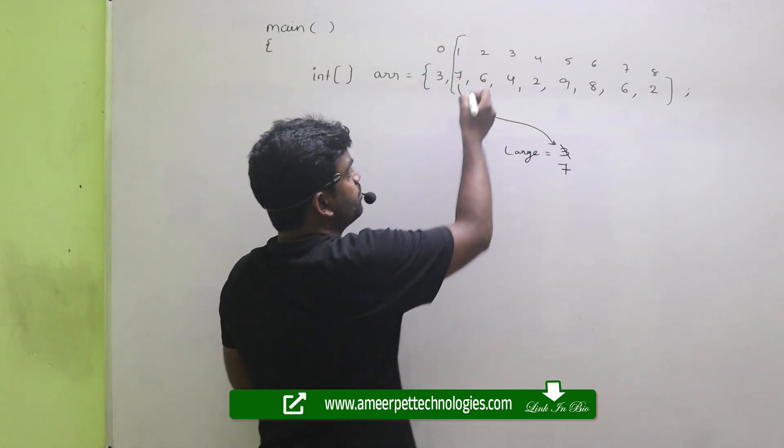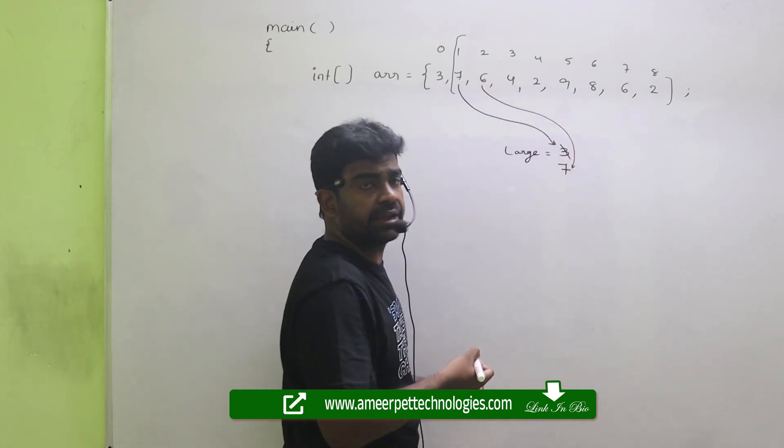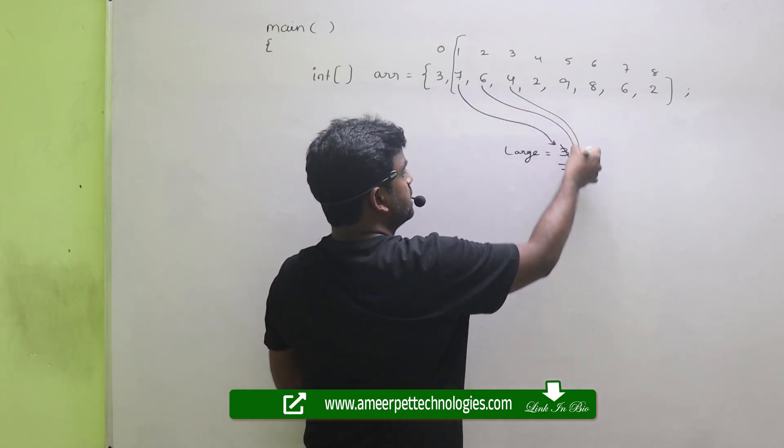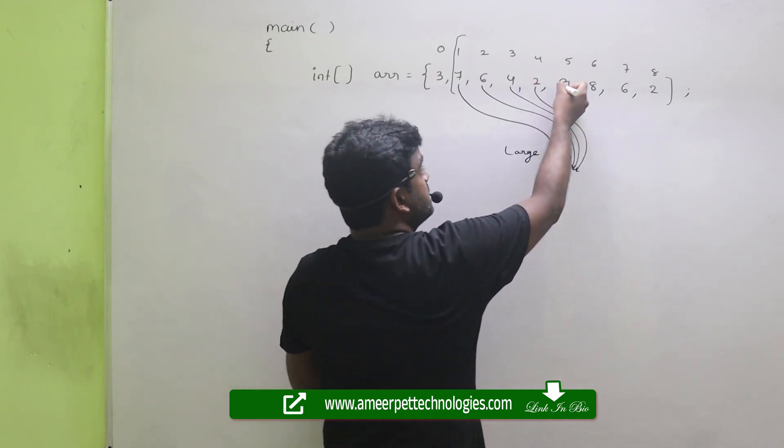Again, repeat the loop. Compare this. 6 is greater than 7? No. Fail. 4 is greater than 7? Fail. 2 is greater than 7? Fail.